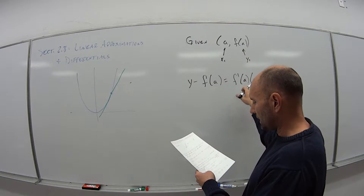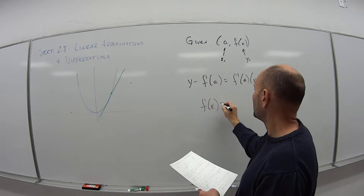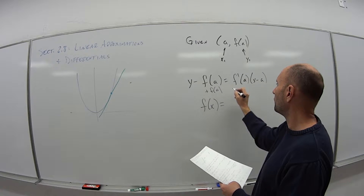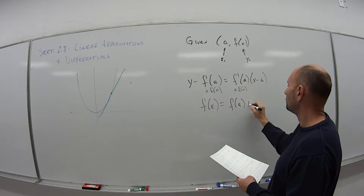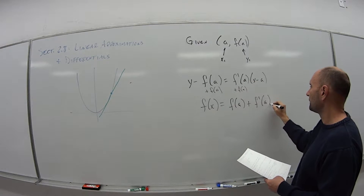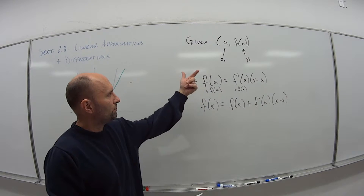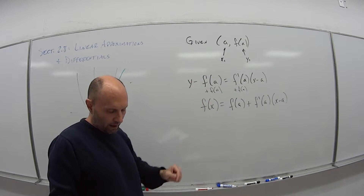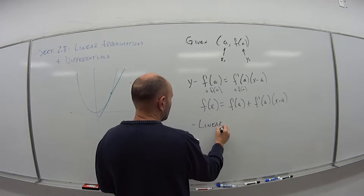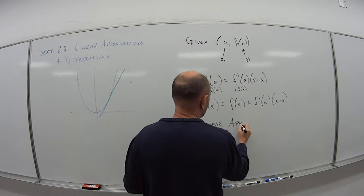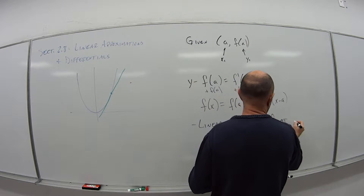If I bring f(A) over to the other side by adding it to both sides, I get f(x) is equal to f(A) plus f′(A) times (x minus A). That's essentially giving me a line using point-slope formula with the slope of the tangent line at that point. And this is what we call the linear approximation of f at some point A.